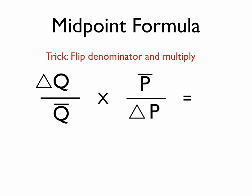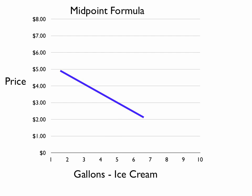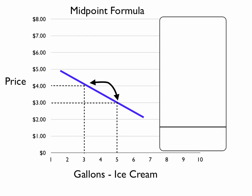Let's go back to our ice cream example and see how this would work. There's our demand curve, and there are the two prices and the two quantities. There's our formula.